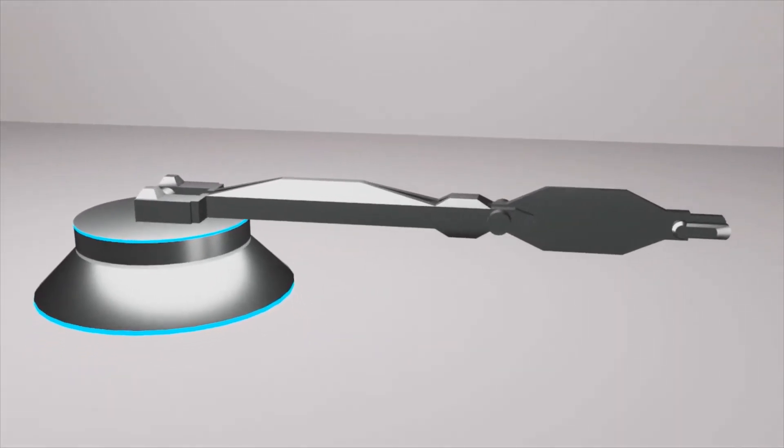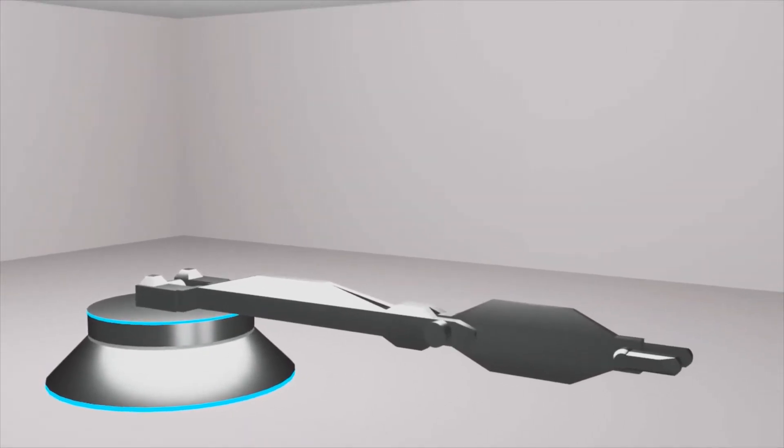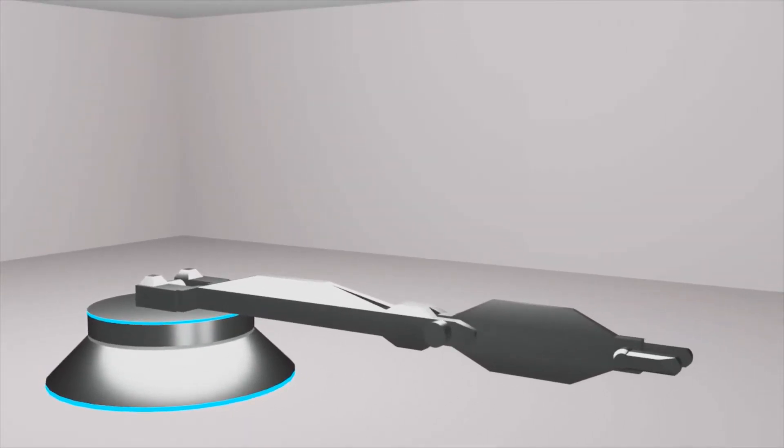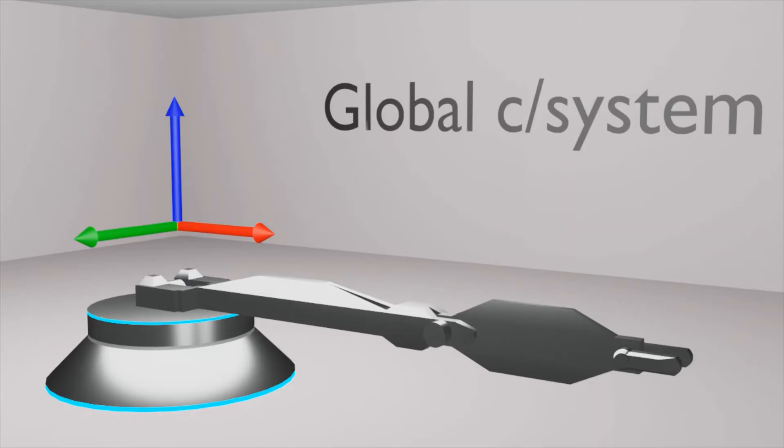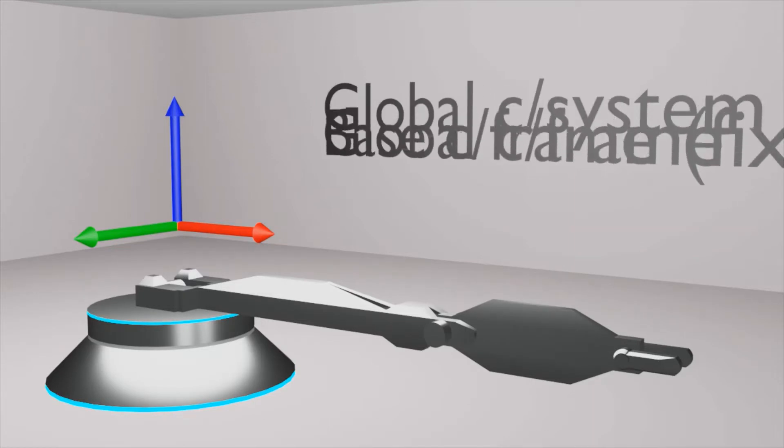Let us take an example of this industrial robot. This robot is placed in a room which has a coordinate system represented by the x-axis, y-axis and z-axis. This coordinate system is called the global coordinate system which is also called as global coordinate frame.